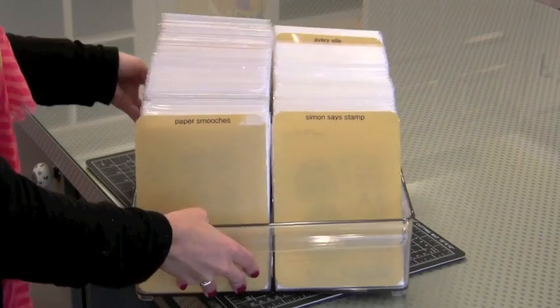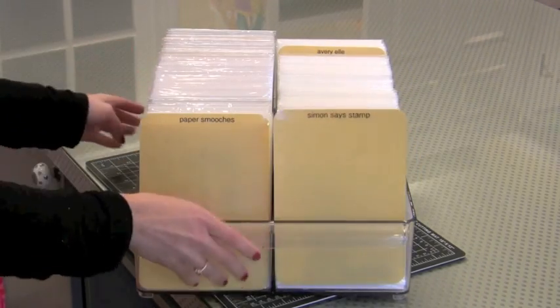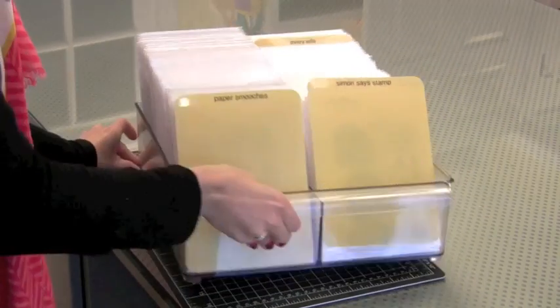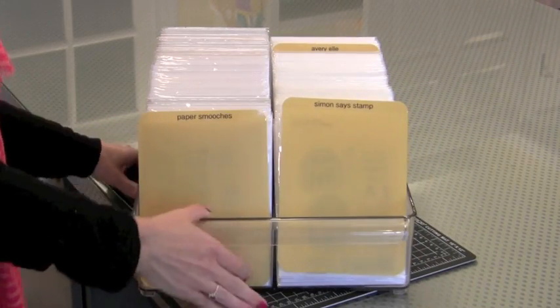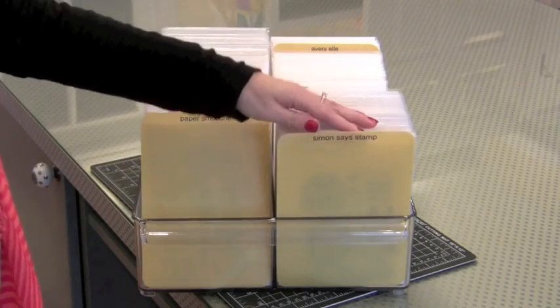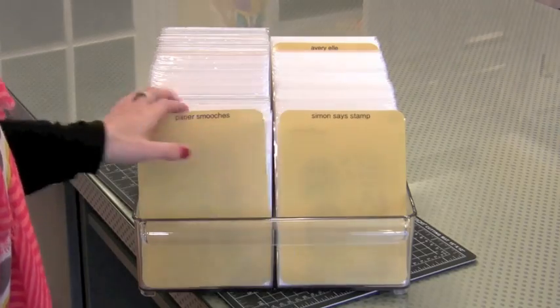It's actually meant to go in your fridge and hold soda cans. But I found it's a super strong and durable clear container that holds my stamps very well. This is what I also store my finished cards in that I want to send out to people. It's just a great dimension. So I have all my clear and cling stamps in little pockets.